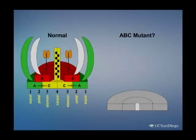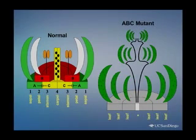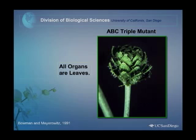What about the ABC triple mutant? Goethe had an idea about what might happen if we didn't have the ABC genes — and he was around a couple hundred years ago. This is what happens: the absence of A, B, and C means all the flower organs develop as leaves. Three genes are mutated and all of a sudden we have essentially an answer to the question that Goethe speculated about way back in 1790.